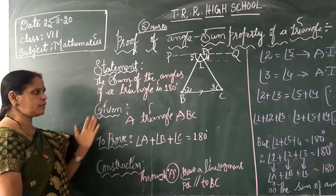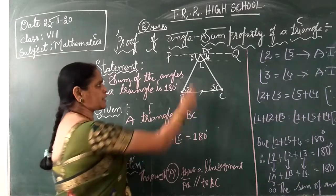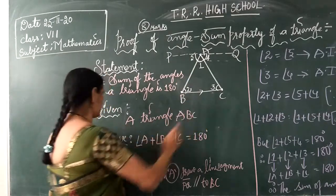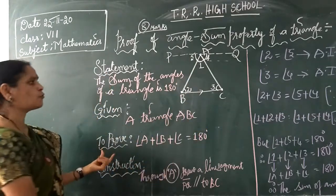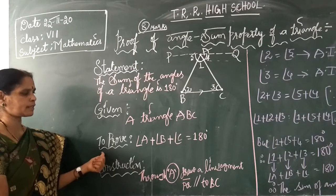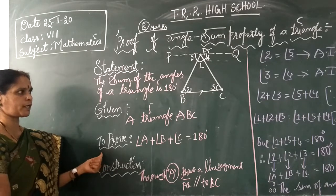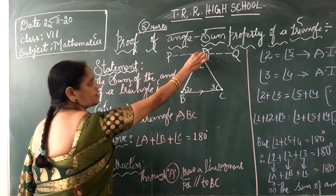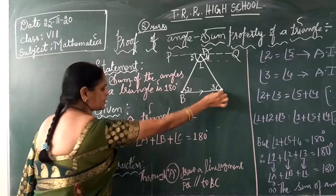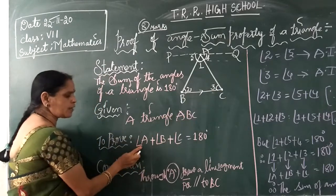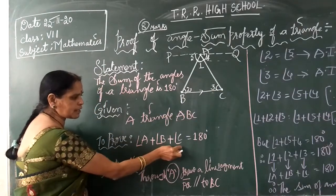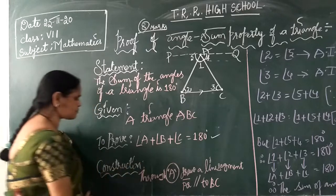What is given? Triangle ABC is given. What do you have to prove? The sum of three angles is equal to 180 degrees. What are the angles? Angle A, angle B, and angle C. So angle A plus angle B plus angle C is equal to 180 degrees — this is what you have to prove.